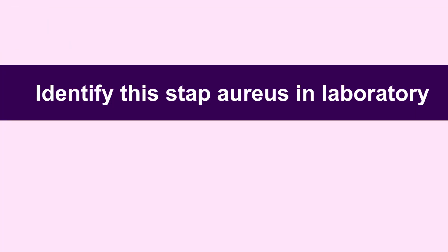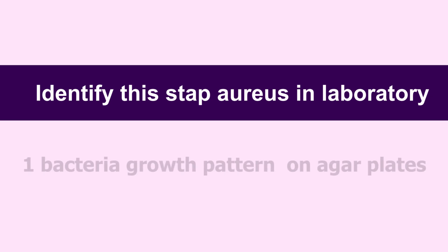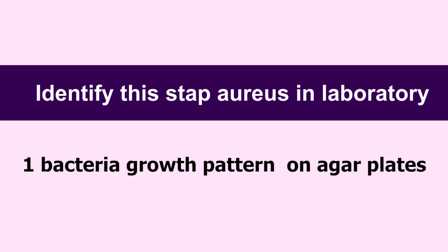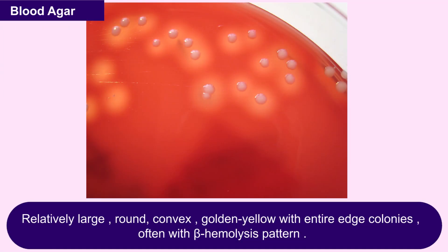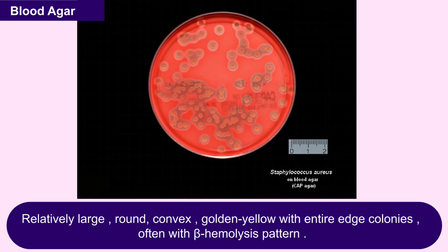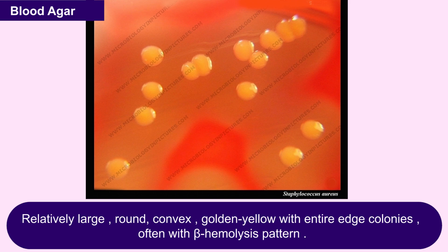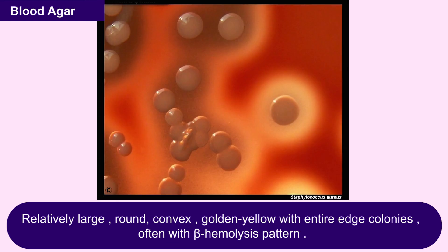When identifying Staphylococcus aureus in the laboratory, bacterial growth pattern on agar plates gives fresh clues. On blood agar, Staphylococcus aureus colonies are relatively large — more than one millimeter in diameter — round, convex, golden-yellow in color with entire edges, and often show a beta-hemolysis pattern.